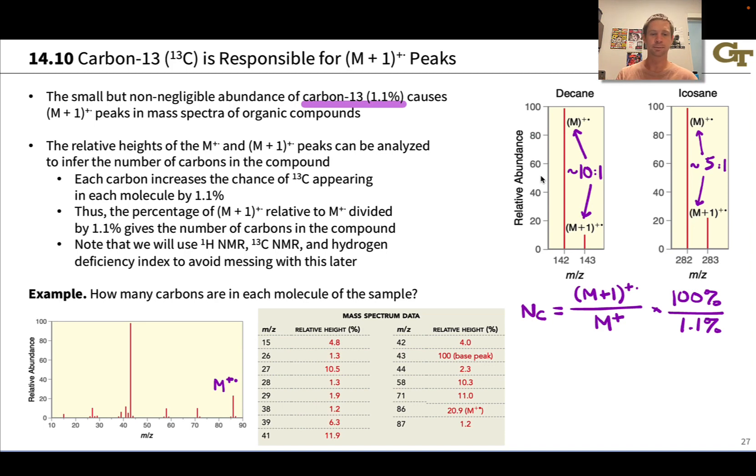In this particular example we've got a molecular ion showing up right here and the M+1 peak down here. It's going to be helpful to use the numbers in the table: 20.9 relative height for the molecular ion at 86, and 1.2 for the M+1 peak at 87.